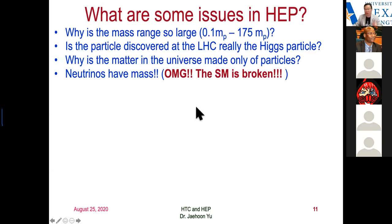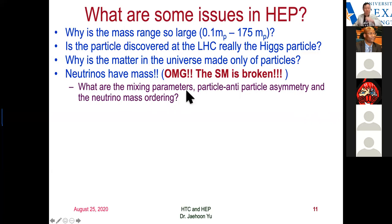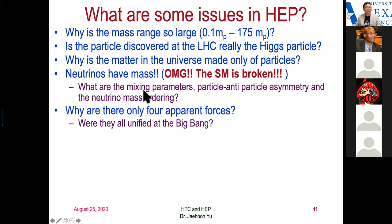Neutrinos are supposedly massless in the Standard Model. But through 20 to 30 years of measurement we found that neutrinos show indications of having mass, because when they have mass and flavor differences they change their flavor as they fly — that's quantum mechanical oscillation. That means the Standard Model, which requires neutrinos to be massless, is broken. So we have to study this; that's what we're doing by building a new facility and detector at Fermilab. Why are there only four apparent forces, and at the Big Bang were all forces unified?